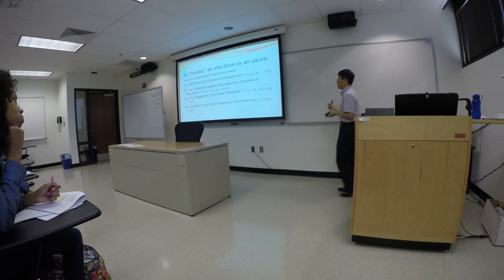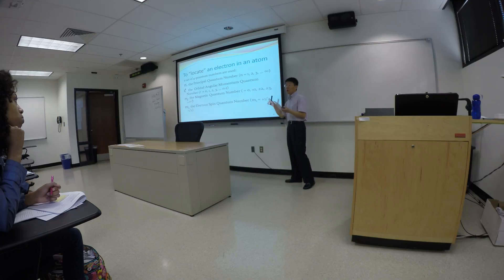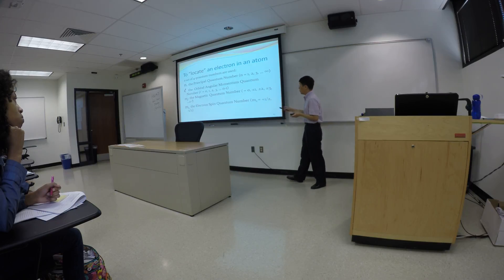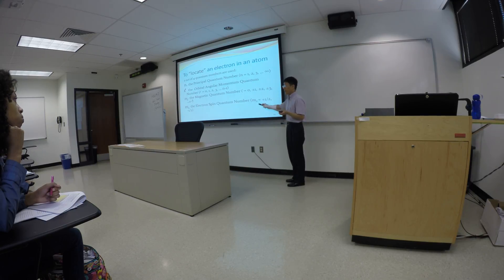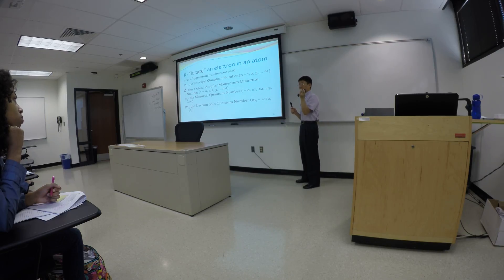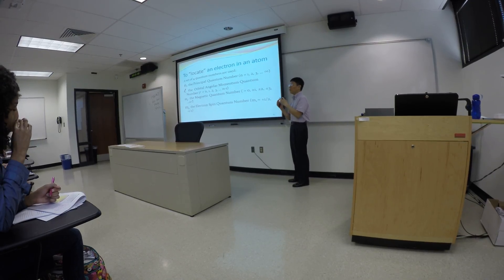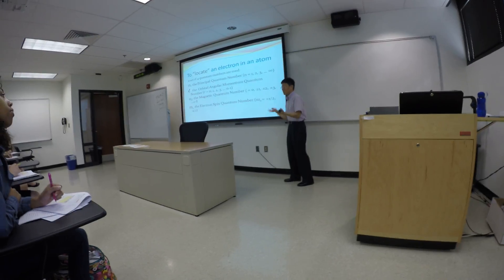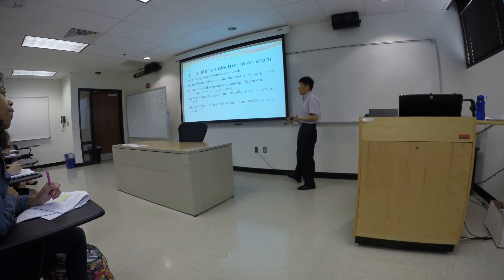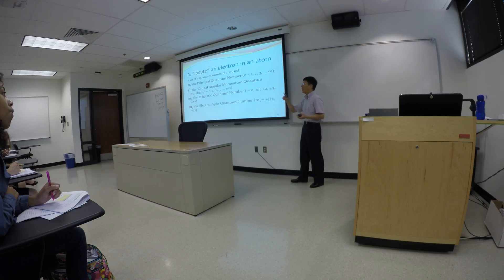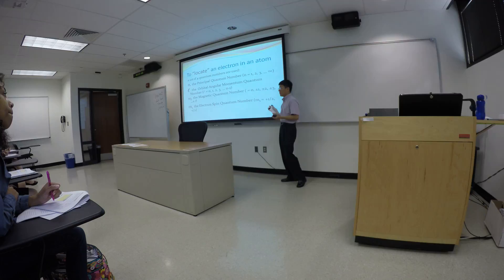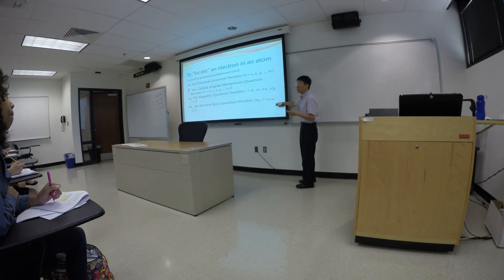The last quantum number is what we call the electron spin quantum number ms. There are only two values associated with ms: either positive one-half or negative one-half. This number — do not treat it as just one-half; ms has two possibilities, positive and negative.